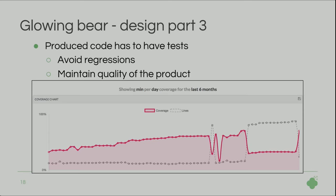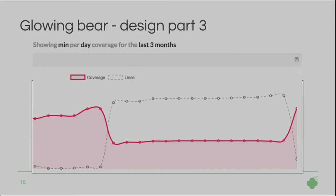Looking at the code coverage graph over six months: the first drop occurred when we first introduced SmartR by merging its code base with the base UI — SmartR had no tests, so coverage dropped. We decided to remove it and find a different way, which led to the plugin architecture. The second drop was a developer mistake, forgetting to include tests when pushing to GitHub. The third iteration temporarily put SmartR back for demo purposes. Since last week it's been deployed using the plugin architecture, and the test coverage has returned to its previous level.